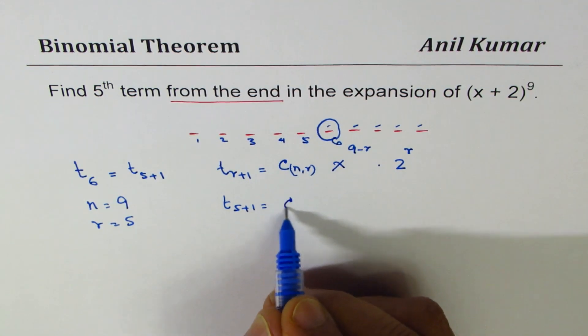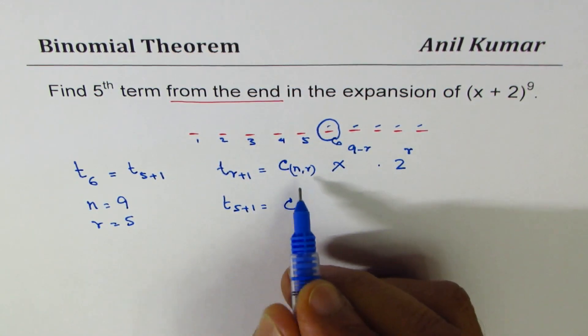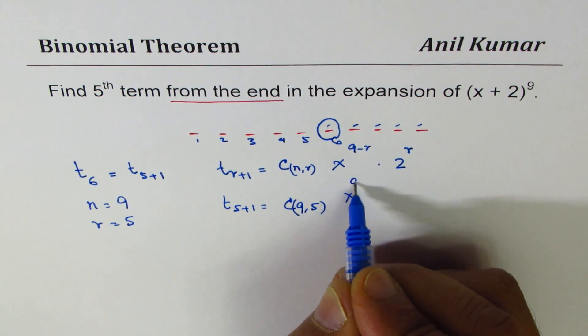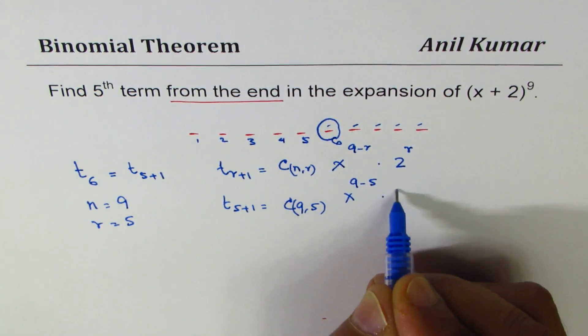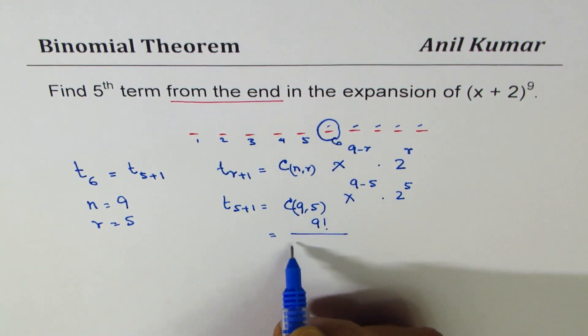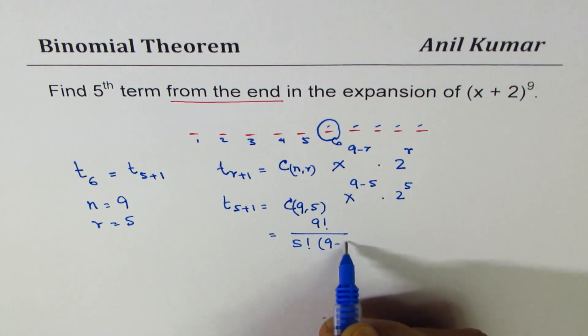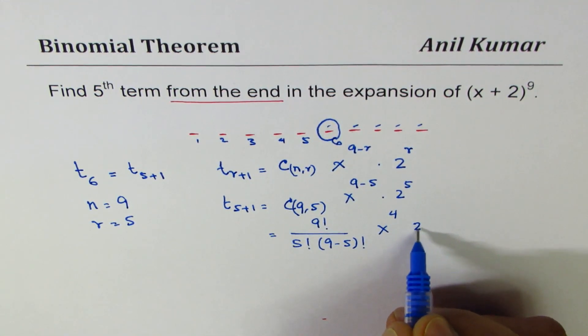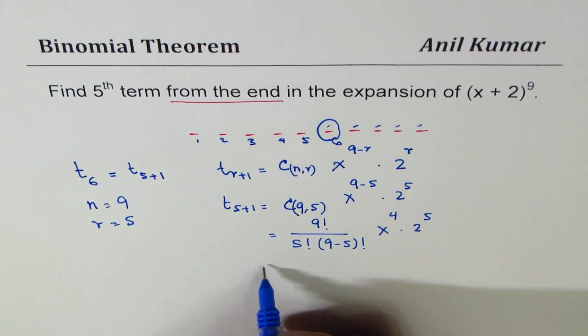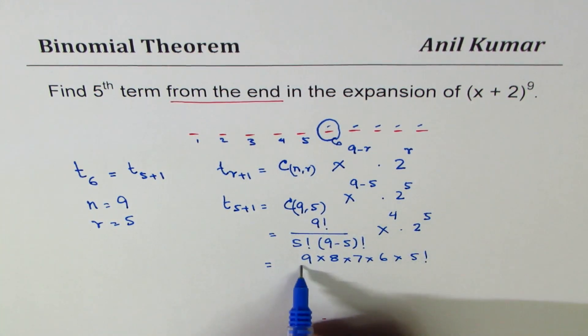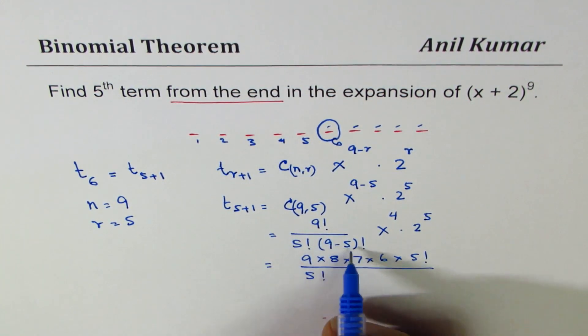The term will be t_(5+1) will be equal to C(9,5) x to the power of (9-5) times 2 to the power of 5. So that gives you 9 factorial divided by 5 factorial times (9 minus 5) factorial. So this is 9 times 8 times 7 times 6 times 5 factorial divided by 5 factorial.